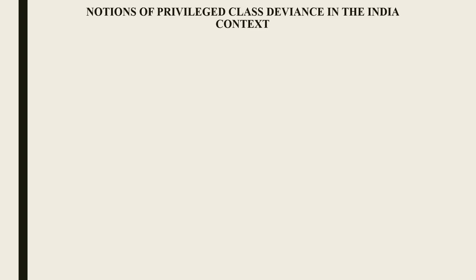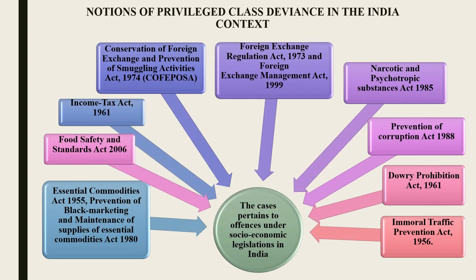Many acts have been introduced by the government from time to time to address socioeconomic offenses. The first is the Essential Commodities Act 1955, and the Prevention of Black Marketing and Maintenance of Supplies of Essential Commodities Act 1980 — aimed at providing food supply to consumers and protecting them from exploitation by unethical traders. The next is the Food Safety and Standards Act 2006, whose objective is to lay down science-based standards for food articles and regulate their manufacture, storage, distribution, sale, and import to ensure safe and wholesome food for human consumption. It also provides penalties where food standards are not in conformity with the act.